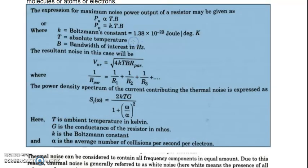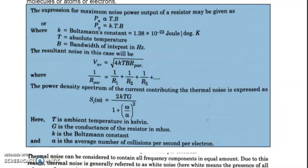Let us understand the mathematical part of thermal noise. If we are calculating the maximum noise power output across a resistor in a circuit, the noise power is directly proportional to T times B, where T is the absolute temperature and B is the bandwidth of the signal. So the noise power P equals K times T times B, where K is Boltzmann's constant.